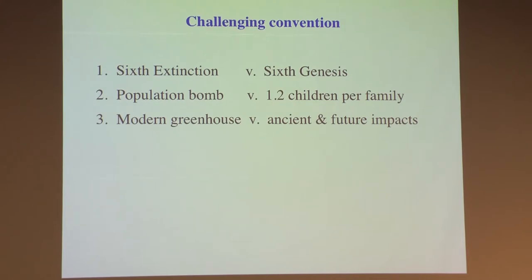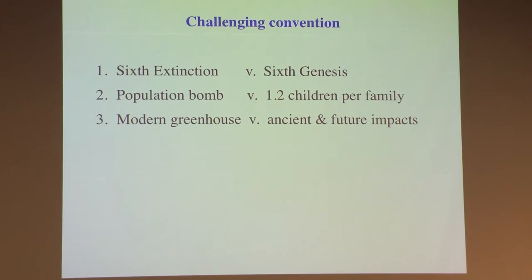We're creating a large number of new species, intentionally and non-intentionally. The trend in population demographics is about 1.2 children per woman, and it doesn't take much math to realize that's not an explosion, it's an implosion — not due to disasters, just due to what people want when they enter cities. For greenhouse effects, I'll argue that most were set up by our ancestors when they killed off herbivores in the tundra, and that can be reversed.